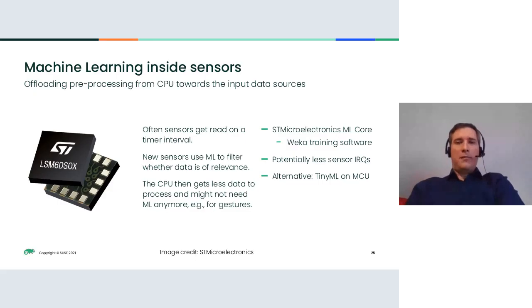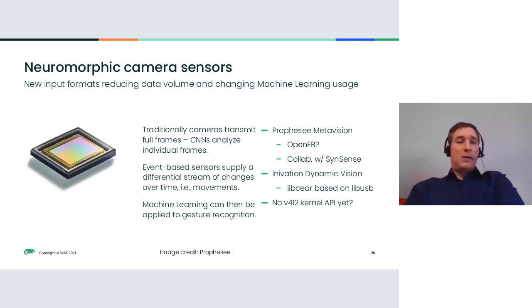Very briefly for time reasons, there are sensors that have machine learning capabilities inside them so you don't need to do the processing on the CPU side then at least for some pre-processing. Another way is camera sensors that are no longer giving you the full frames that you then need to process for each frame that you receive on the host system but you might actually get a differential stream with what actually changed like the movement then showing up in dark and things that are statically either being completely white or light.